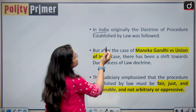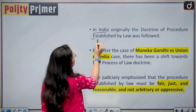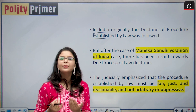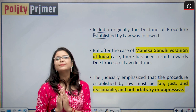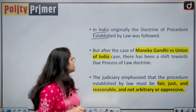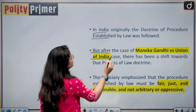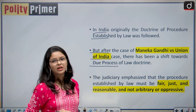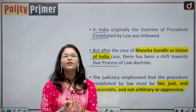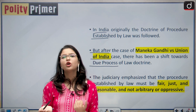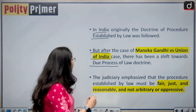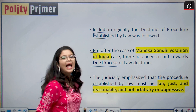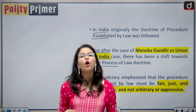In India, originally the doctrine of procedure established by law was followed, as it is explicitly mentioned in the Indian Constitution. But after the case of Maneka Gandhi versus Union of India, there has been a shift towards the due process of law doctrine. The judiciary emphasized that the procedure established by law must be fair, just, and reasonable — not arbitrary or oppressive.